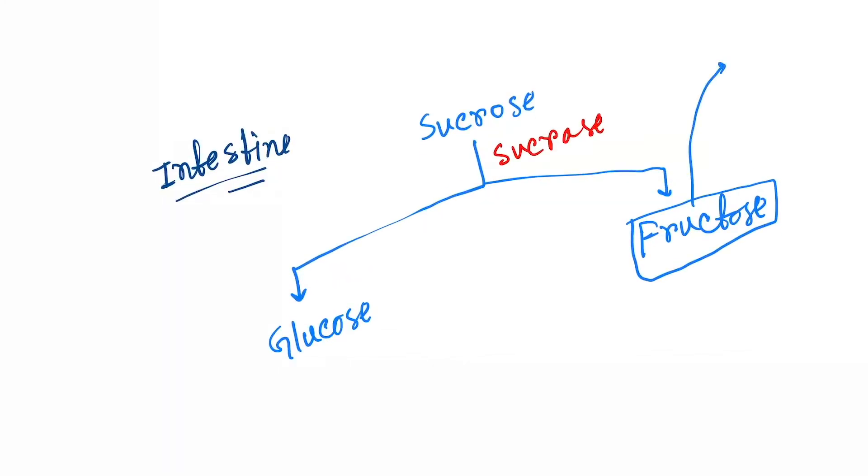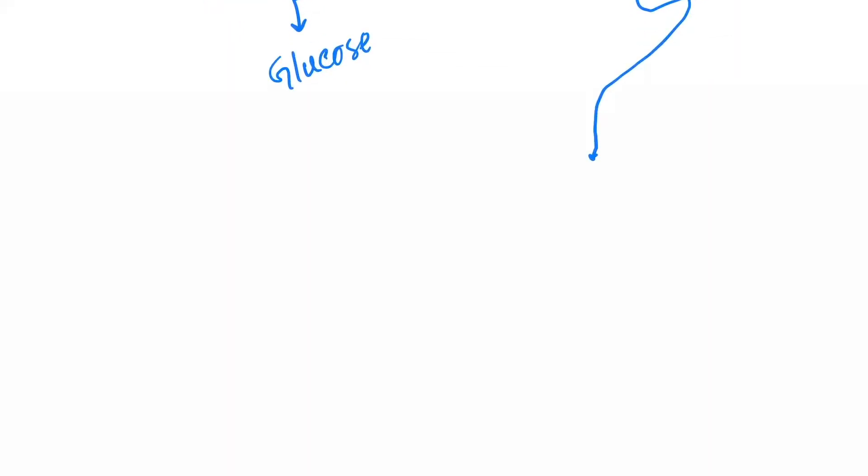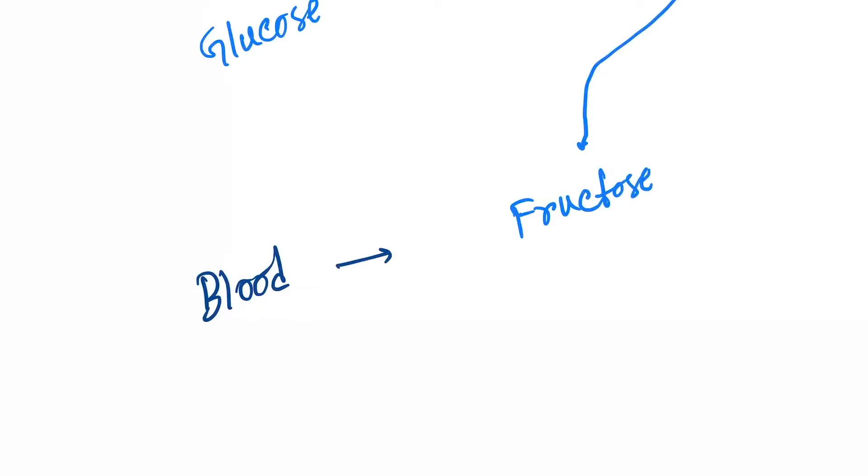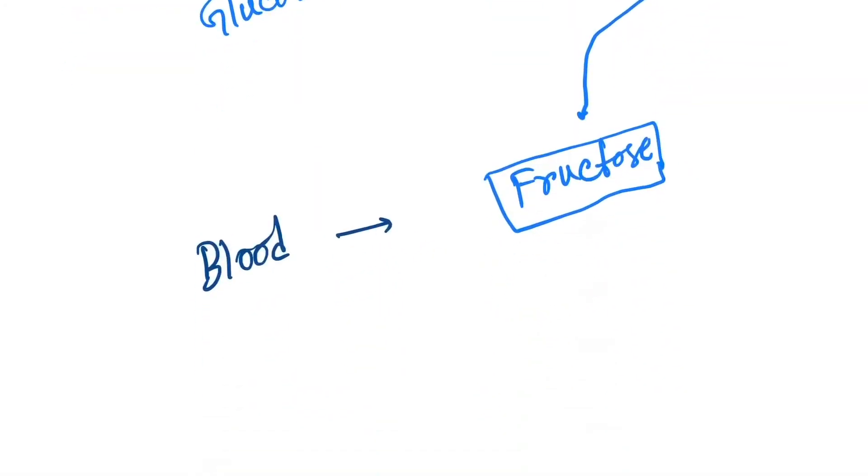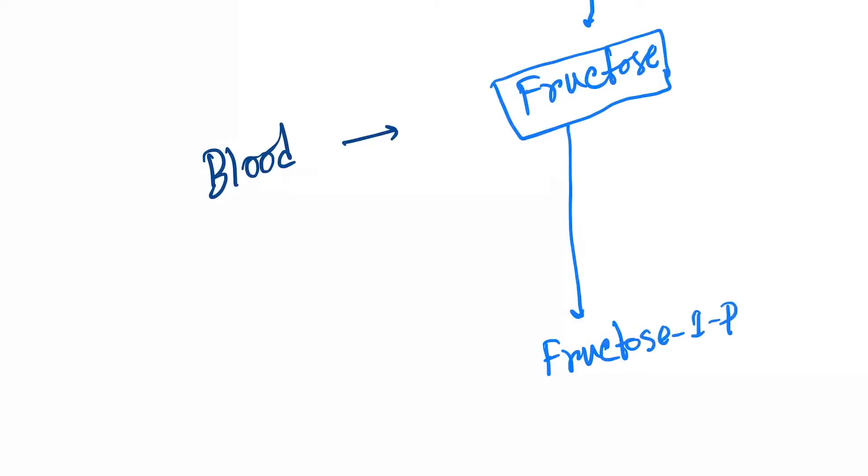Now this fructose will come into blood. So formation of fructose is done. Now it will go into the metabolic pathway. Then fructose will cause formation of fructose 1-phosphate, and this will occur in liver and kidney.